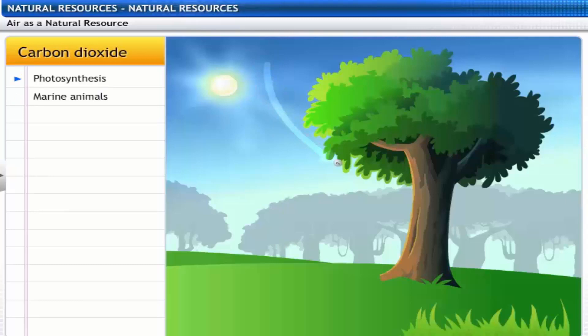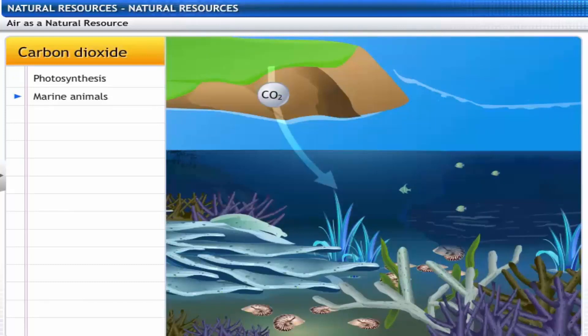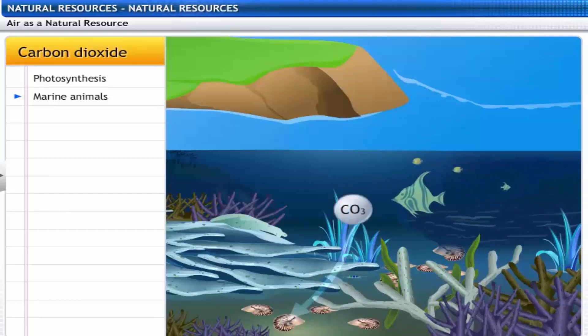The other important atmospheric gas, carbon dioxide, is mainly used by green plants for photosynthesis to prepare food. Marine animals absorb atmospheric carbon dioxide and form carbonic acid. These carbonate ions are used by marine animals to make shells.